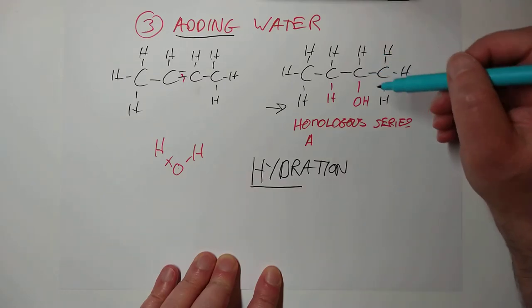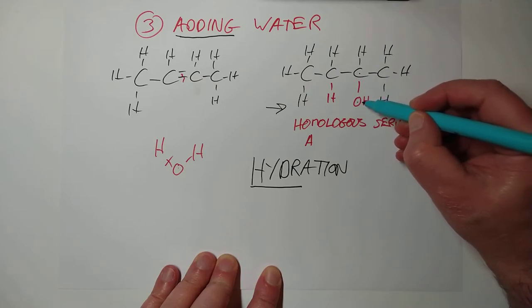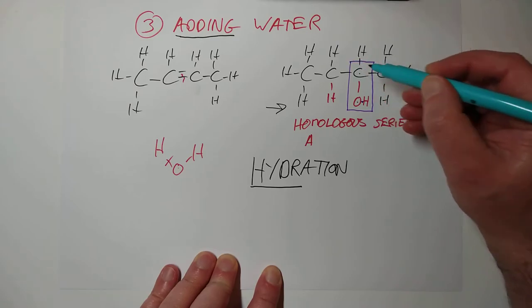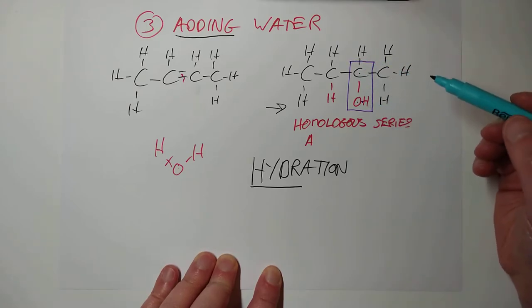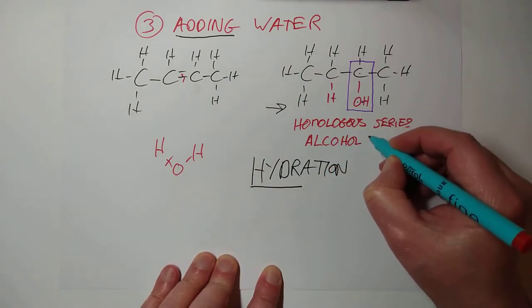So the structural feature, their superpower as it were, how you recognise one of this family. I still haven't told you the name, sorry, I'm just teasing you with the name here, is it's got a carbon attached to an oxygen and bonded to a hydrogen. So that is the functional group. That's the way you recognise this new homologous series and they are called the alcohols.